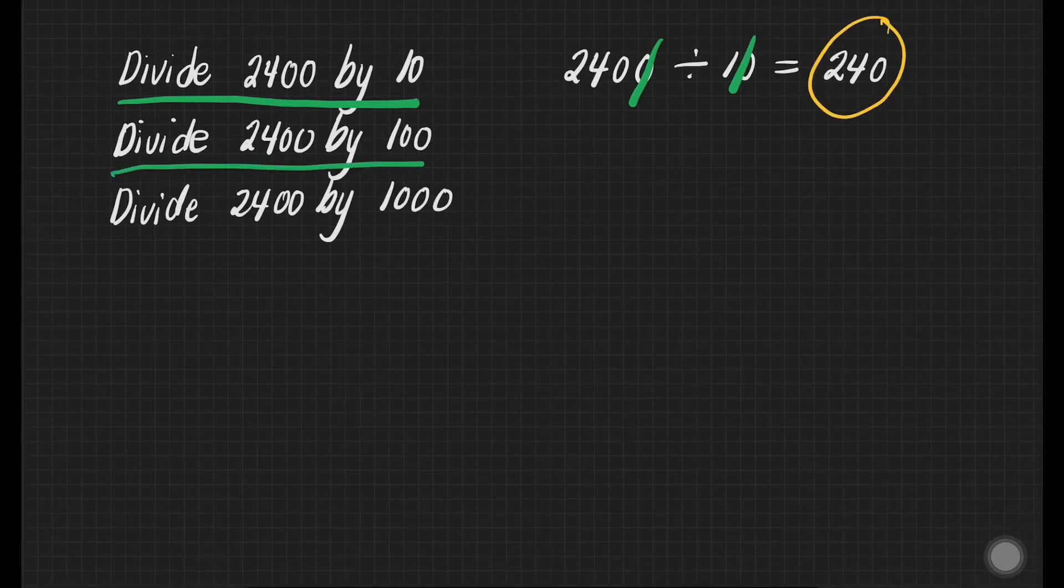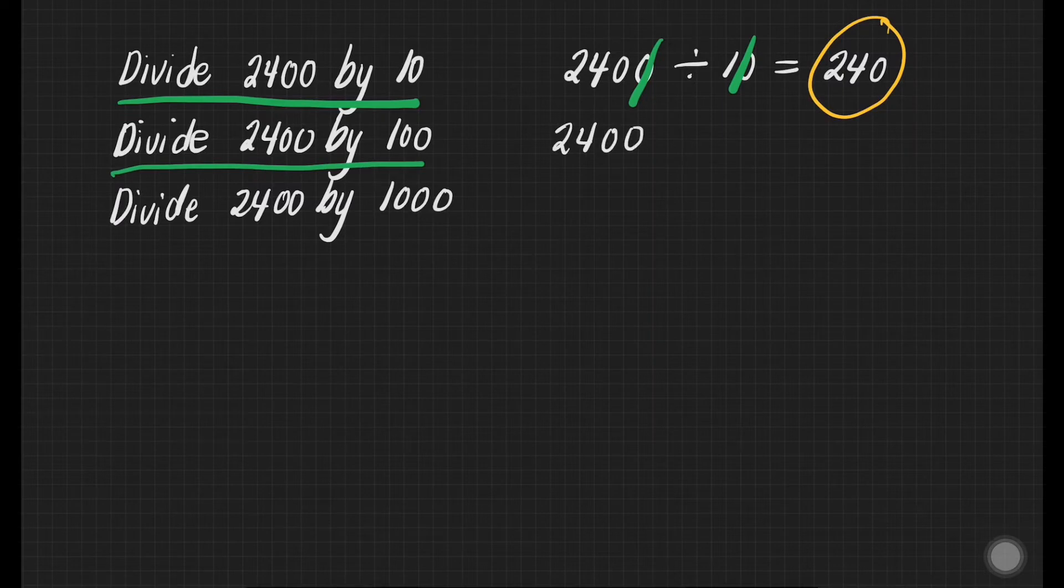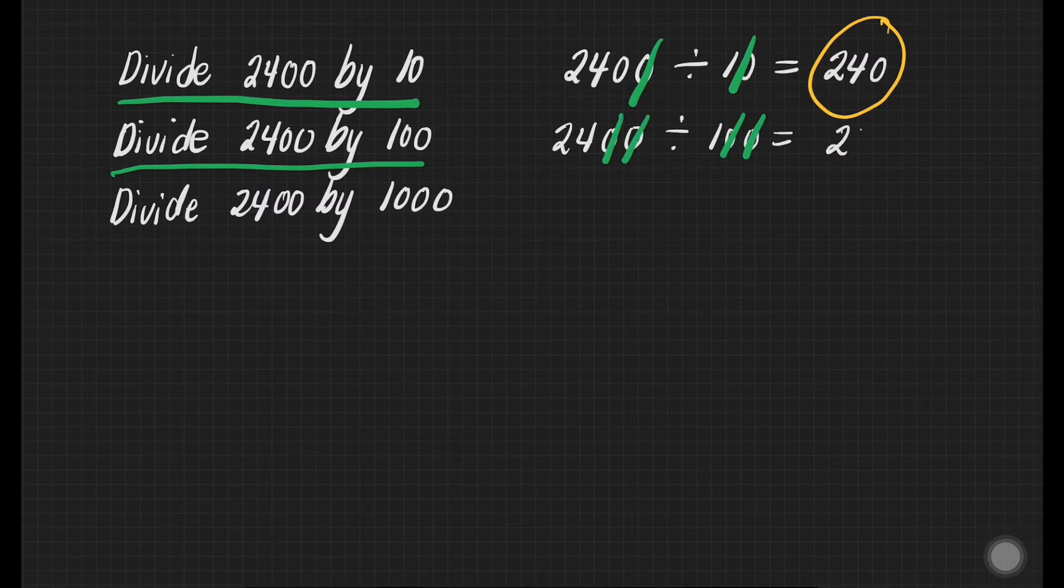Let's have the second one. Divide 2,400 by 100. How many zeros are we going to cancel? Well, cancel 2 from the divisor and 2 from dividend. And that will give us 24 divided by 1 is equal to 24. And we're done.